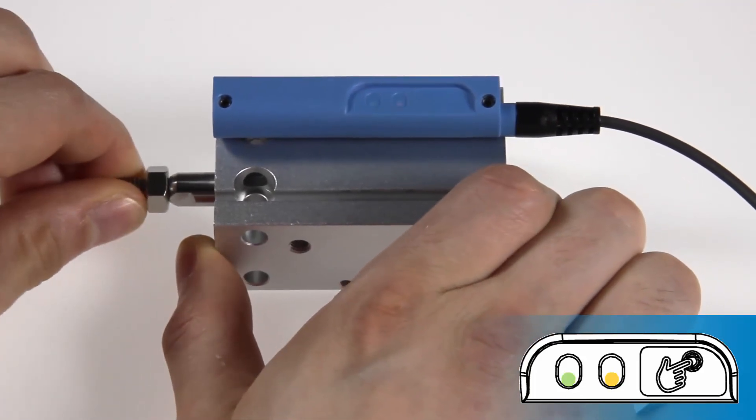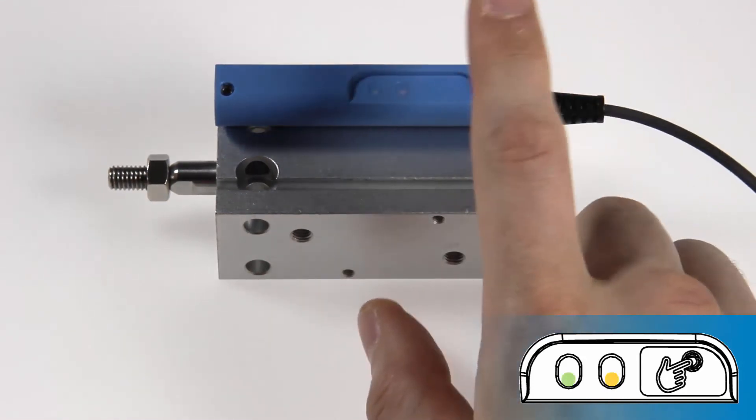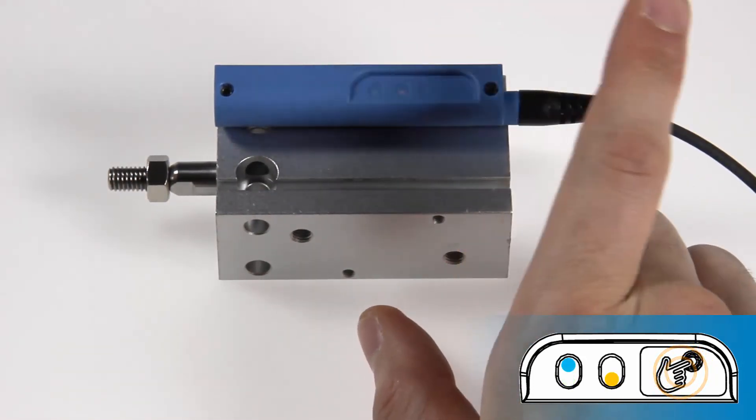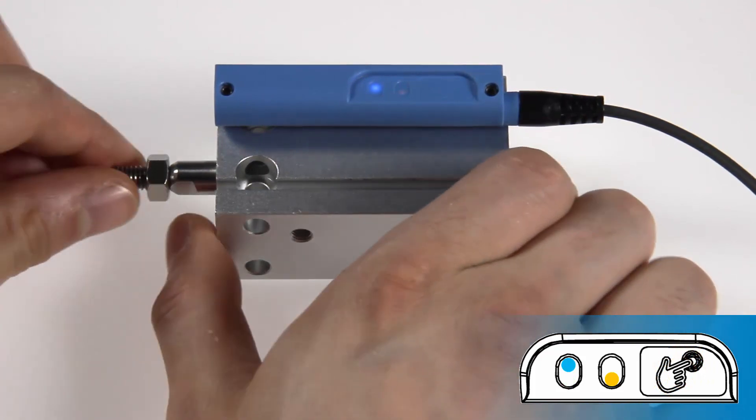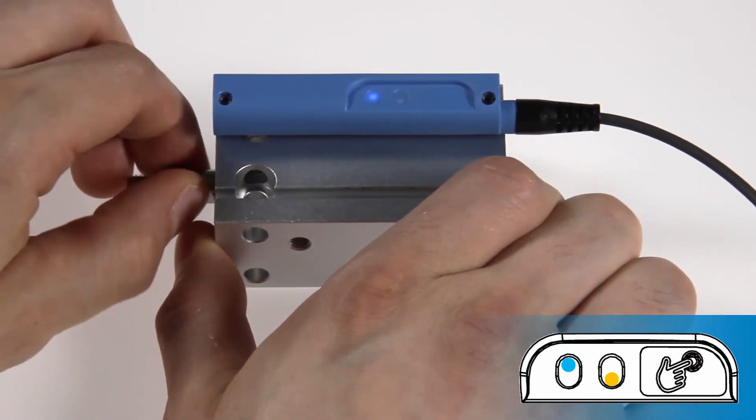Push the piston to the second position for setting the second threshold. Press the keypad. The second threshold is defined and the sensor is now detecting the piston between the two thresholds.